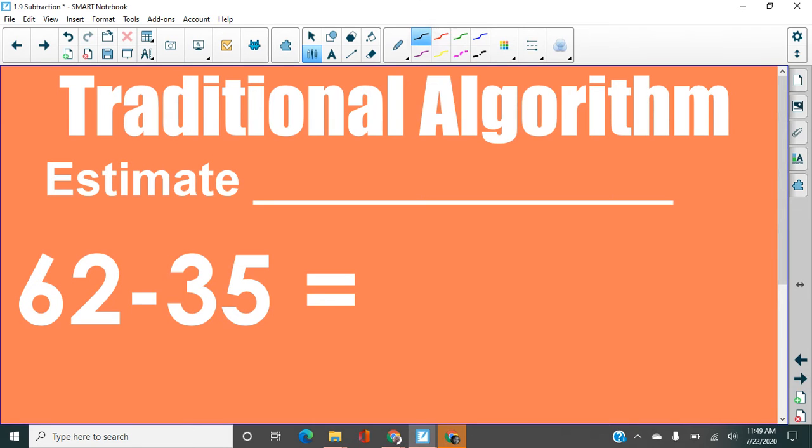We're going to estimate first so that we can have an idea of where our answer should be, so that when we complete the problem, we can make sure that our answer fits the problem that's being asked. So as I estimate this, 62 minus 38, well, 62 is closer to 60. 35, five and above gives it a shove, so that would round to 40. And 60 minus 40 equals 20. So that's my estimate.